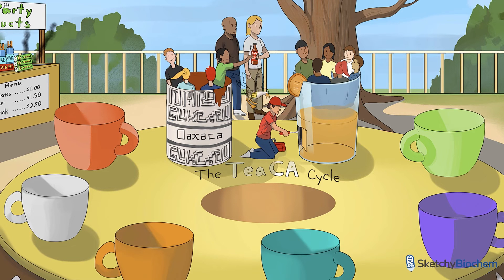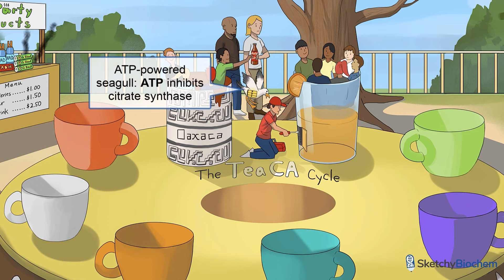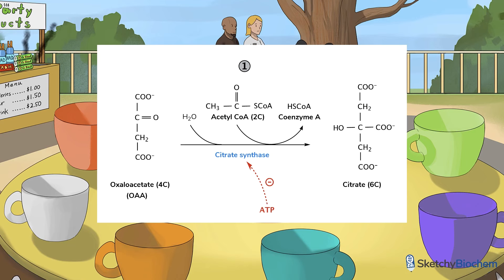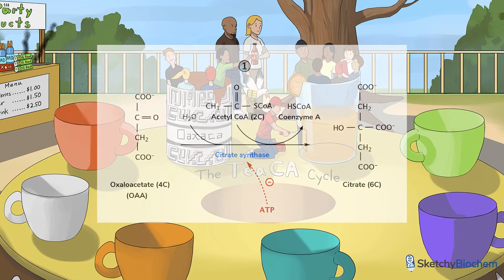Interestingly, ATP inhibits citrate synthase. High ATP inside cells slows down the TCA cycle because we have plenty of fuel available and don't need to make more. An ATP-powered animatronic seagull escaped the pyruvates of the Caribbean ride and is trying to attack our cast member. When there's plenty of fuel available, excess citrate leaks into the cytosol to inhibit PFK1 and slow glycolysis.